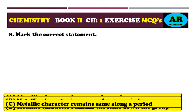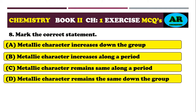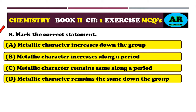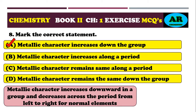MCQ 8: mark the correct statement. Option alpha: metallic character increases down the group. Option beta: metallic character increases along a period. Option charlie: metallic character remains same along a period. Option delta: metallic character remains the same down the group. The correct option is alpha — metallic character increases down the group, and decreases from left to right across a period.